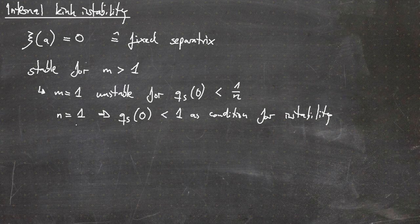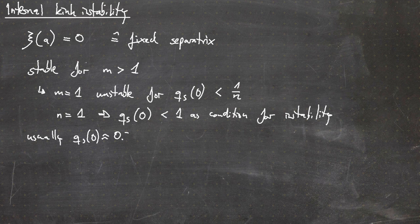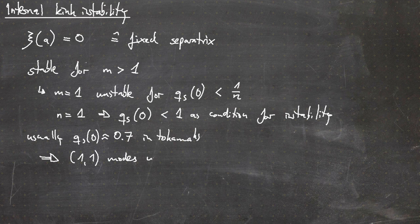Since usually the safety factor in the center of tokamaks is smaller than one — on the order of 0.7 — we do have such a mode. The typical tokamak has a safety factor of about 0.7 in the center, and that means we have such a (1,1) mode.